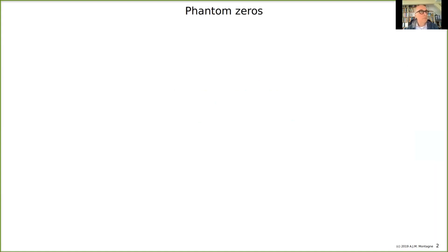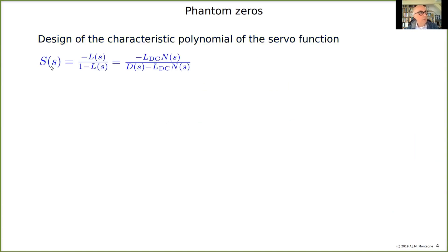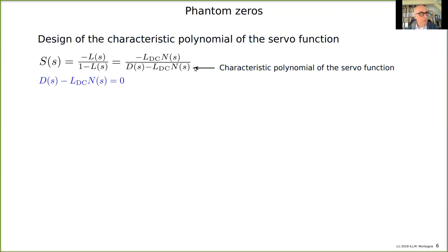What is a phantom zero? We are going to design the characteristic polynomial of the servo function, because the servo function was a measure for the deviation of the real transfer from the designed ideal transfer at an earlier stage. The servo function has a numerator, denominator, and a characteristic polynomial, and the poles of the servo function are found by solving this characteristic polynomial.